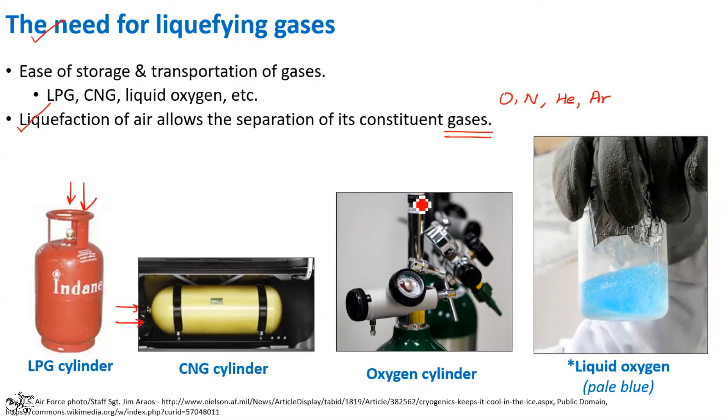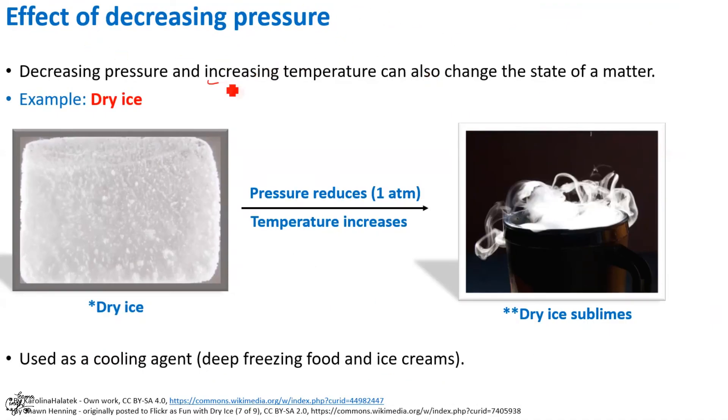We just learnt how on increasing pressure and decreasing temperature, we can change the state of a matter from gas to liquid and further solid. Now, we will learn how doing vice versa, that is decreasing pressure and increasing temperature can lead to a change in the state of a matter. Let me explain this with the help of an important example which is dry ice. We have already learnt in my previous video that dry ice is solid carbon dioxide.